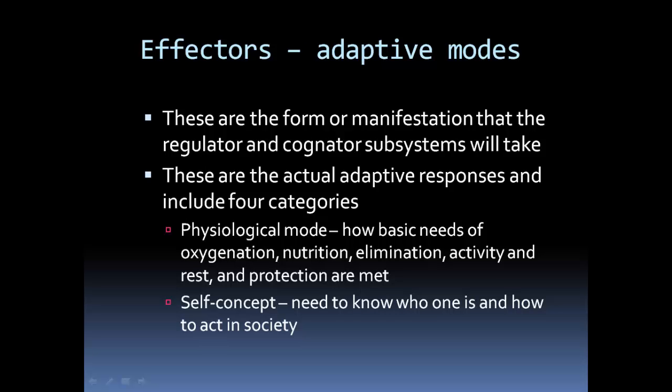The effectors are the adaptive modes. They can be mixed up with control processes, but this is the actual manifestation of the adaptive responses — not a general idea or subsystem like the regulator or cognator. This is actually what's going to happen. There are four categories. The first is the physiological mode, which covers the basic needs: oxygenation, nutrition, elimination, etc.